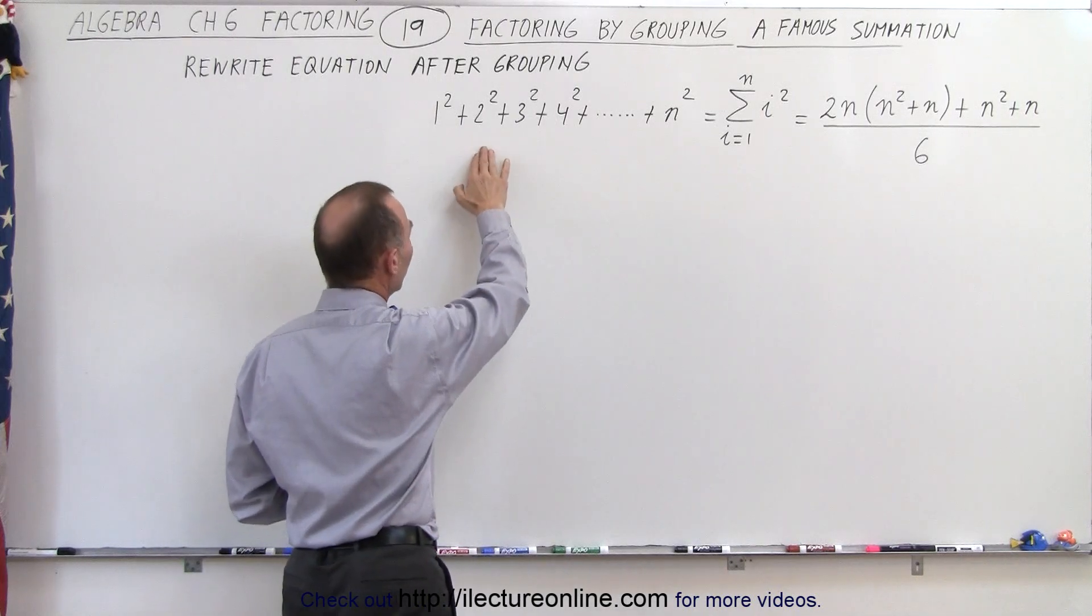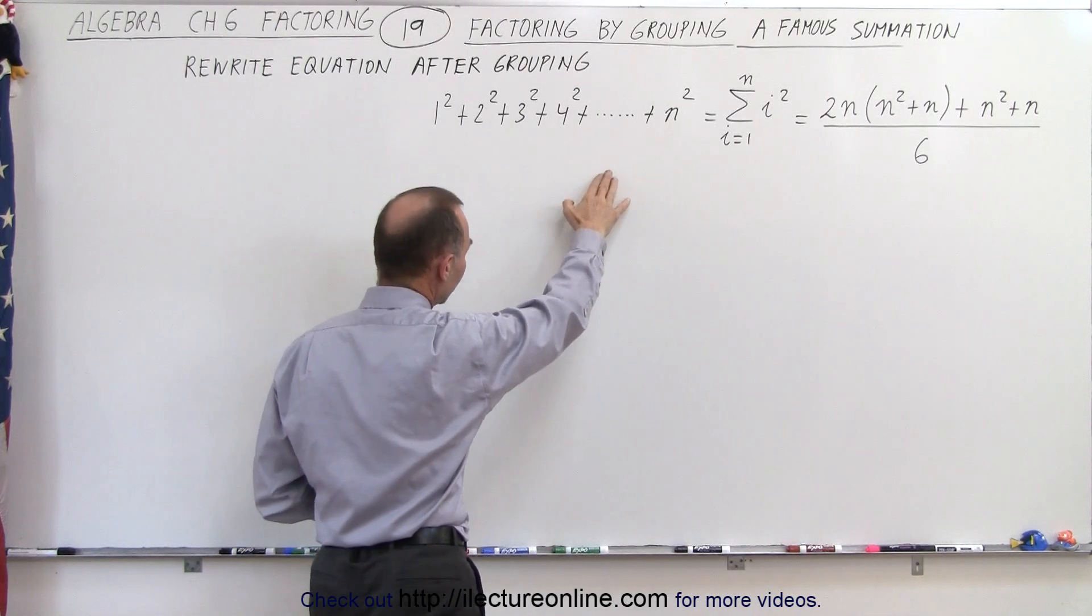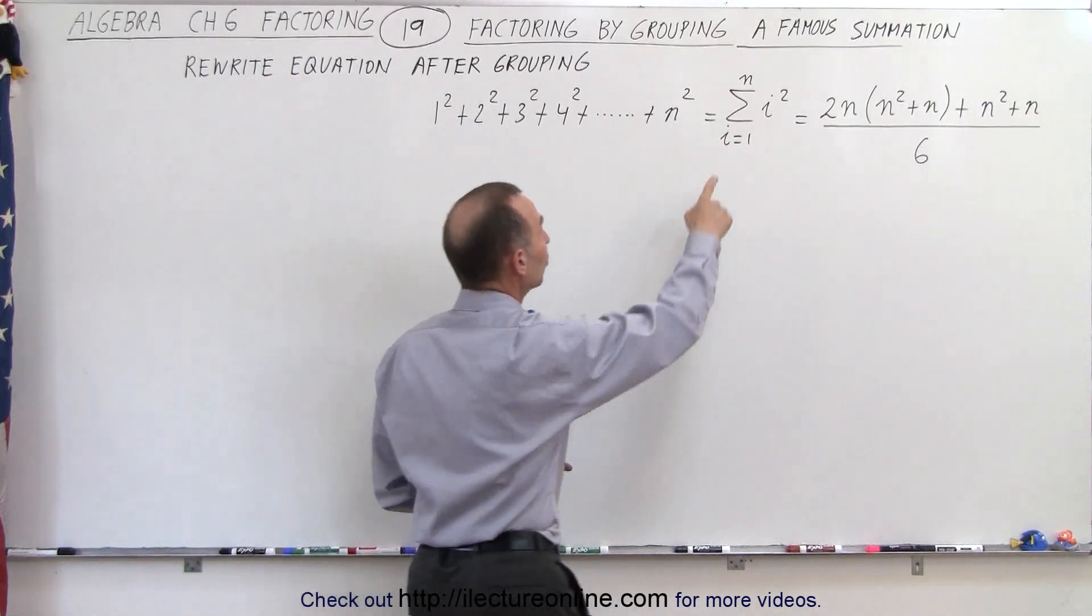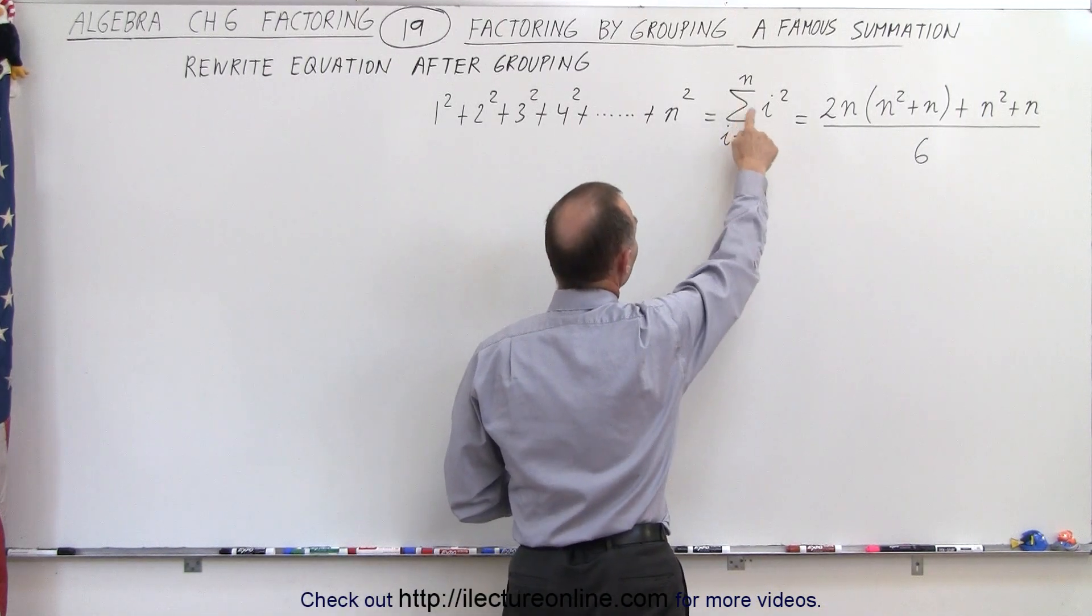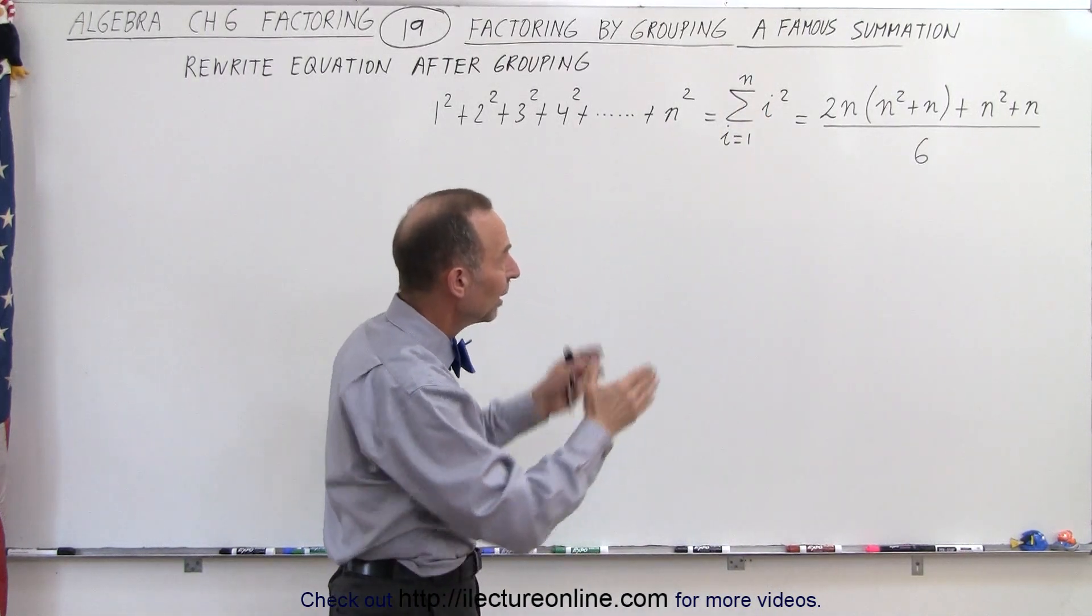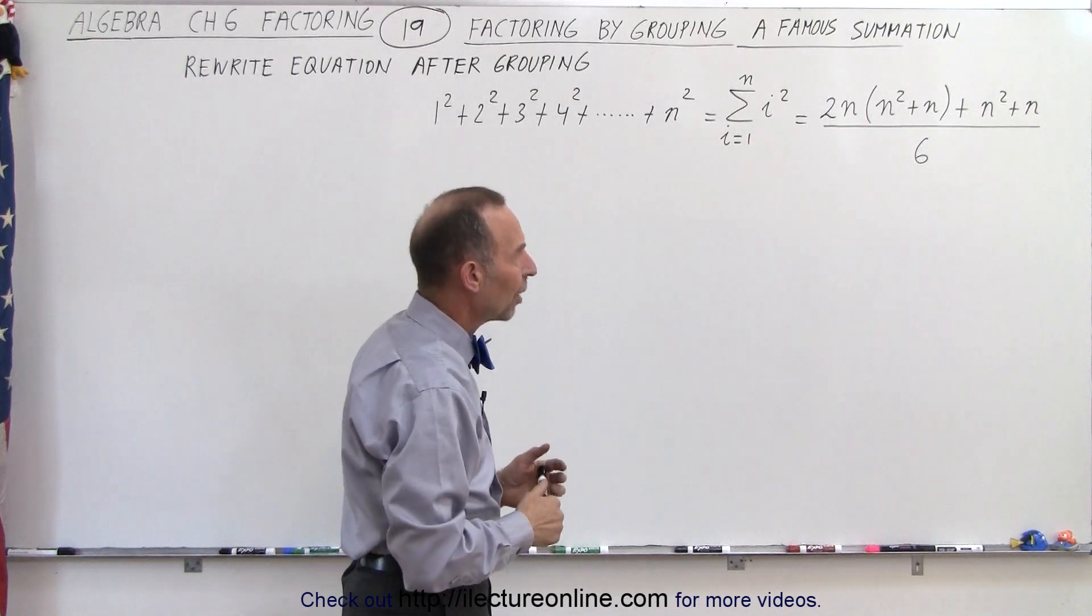1 squared plus 2 squared plus 3 squared plus 4 squared plus 5 squared plus 6 squared all the way up to n squared. We can write it as a summation like this from i equals 1 to n where i is squared. So just keep summing it up until i becomes n.